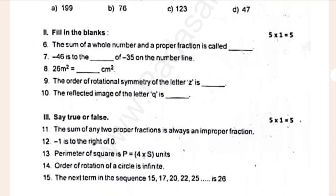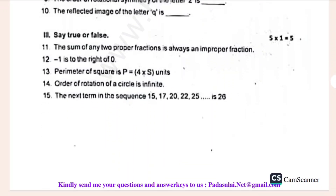Let's see the fill-ups. The sum of the whole number and the proper fraction is called dash. Minus 46 is to be dash of 35 on the number line. The 8th term image is close to the house — you can see the 96m square. The 9th term: the order of rotation of the letter H, R, D is dashed. The 10th term: the reflected image of the letter Q, E.